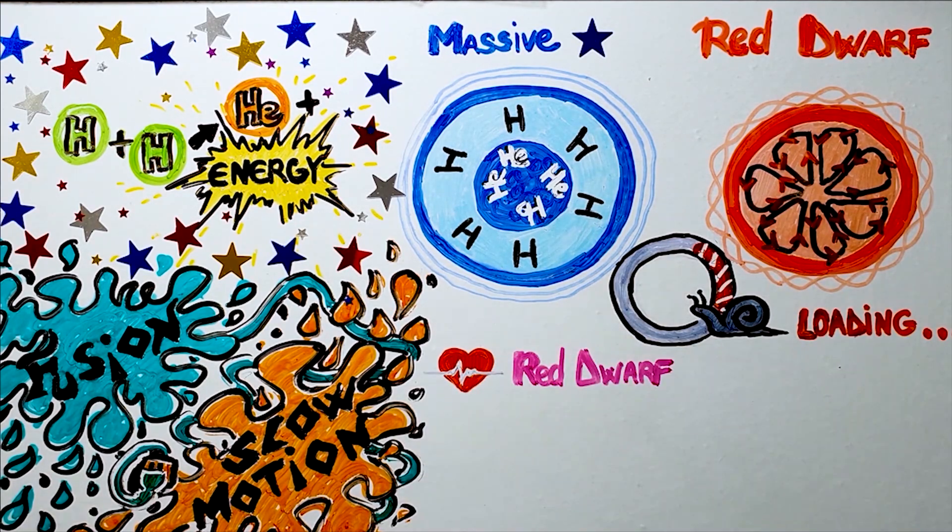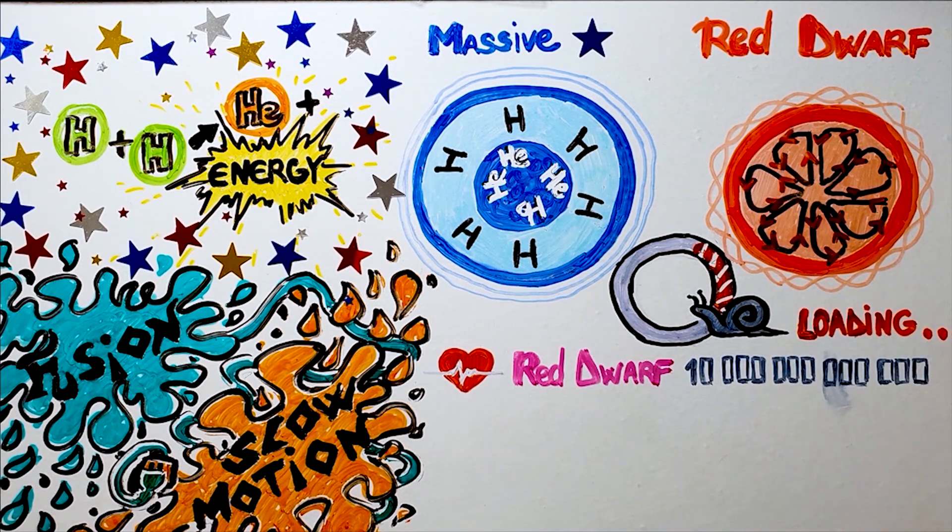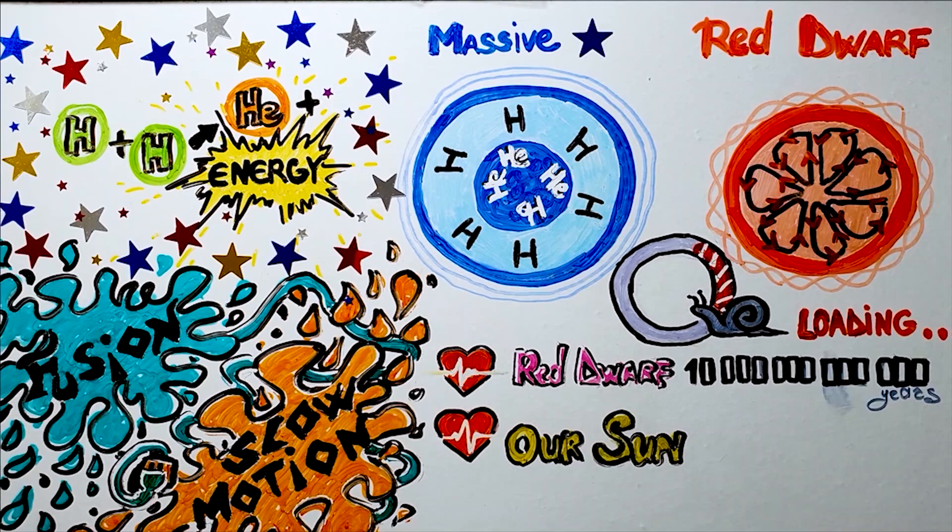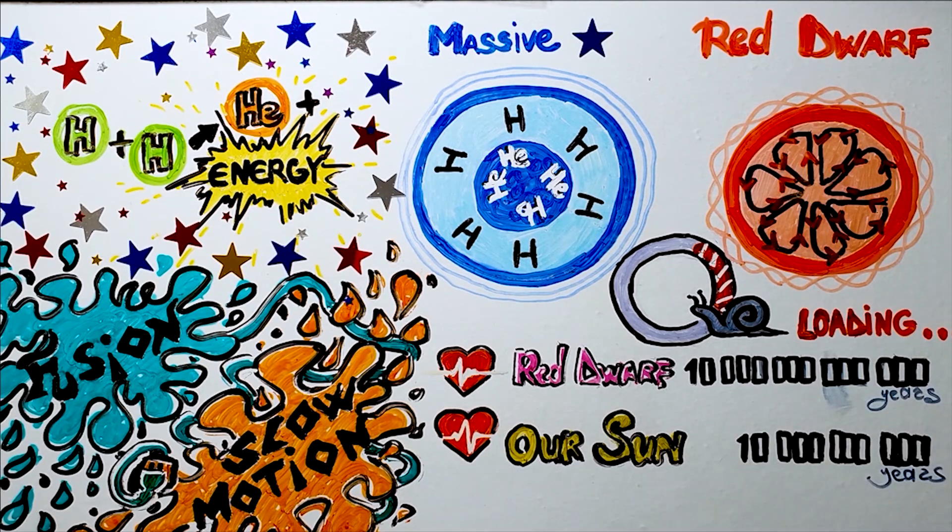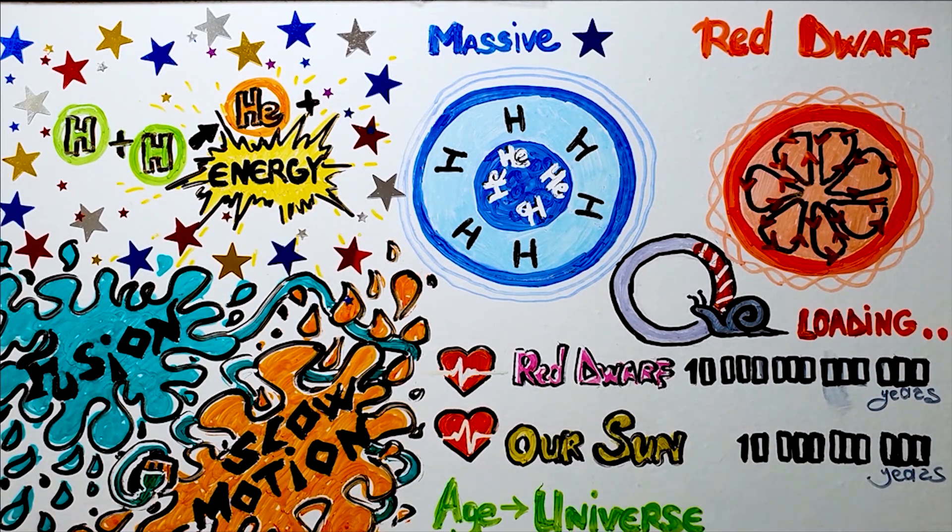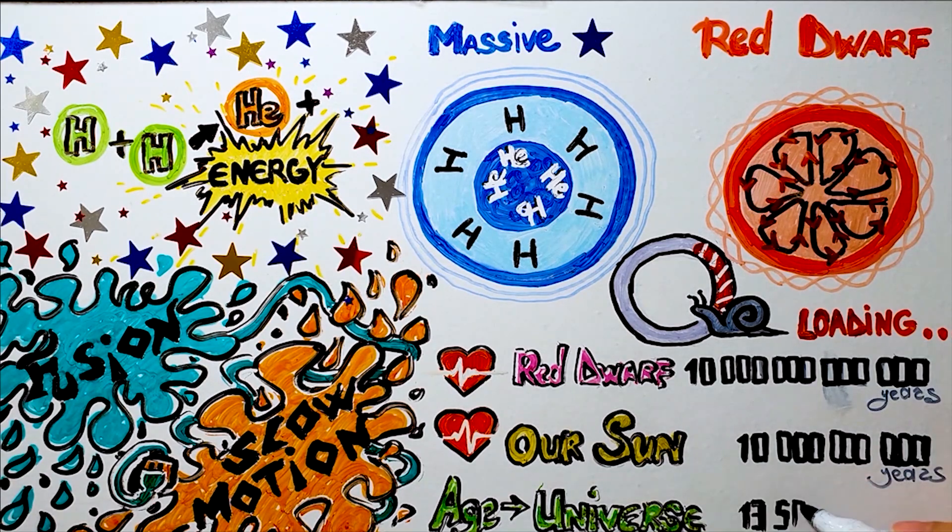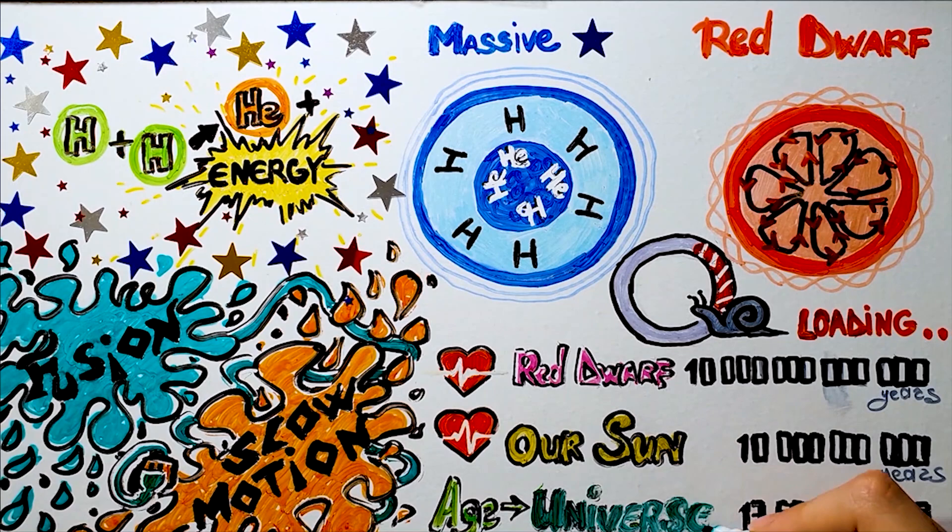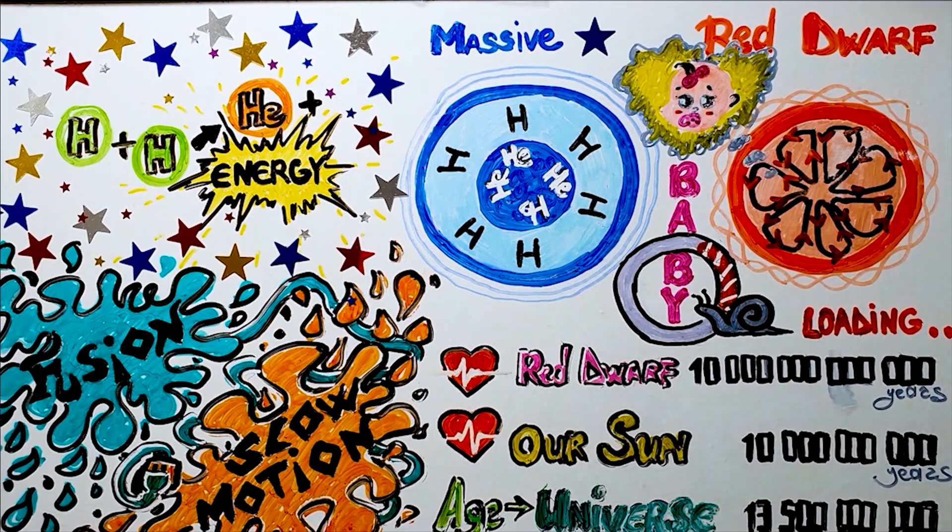In fact, red dwarfs burn so slowly that they average a lifespan of about 1 to 10 trillion years. By comparison, our sun's lifespan is only about 9 or 10 billion years. Since the observable universe is only 13.5 billion years old, every single one of trillions of red dwarfs that exist is still at its earliest development stages.